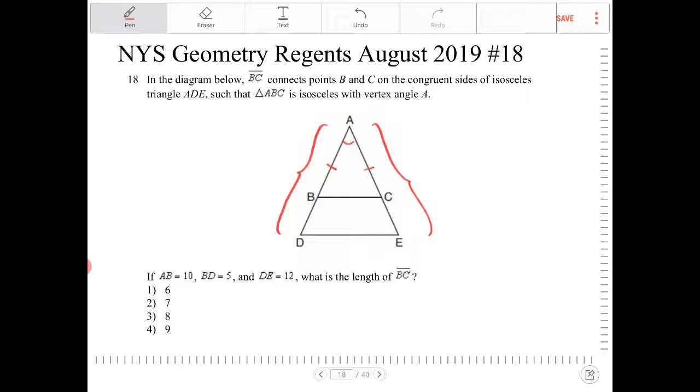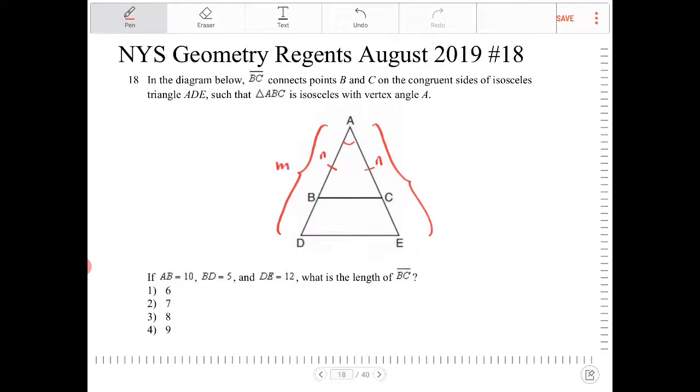How do we know that they are going to be similar? Well, we can describe the sides as being proportional to one another. We don't know what the length of AB or AC is. Let's say we call that N, therefore AC must also be N. We don't know what the side length of AD is. Let's call that M. And we don't know what the side length of AE is. That also has to be M, because they're isosceles.